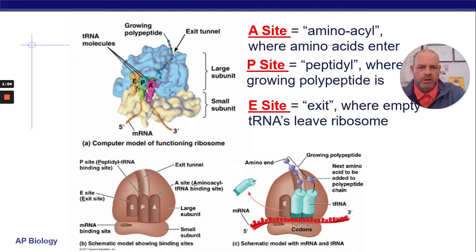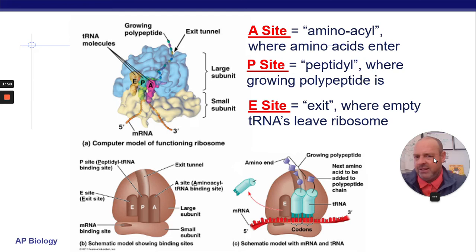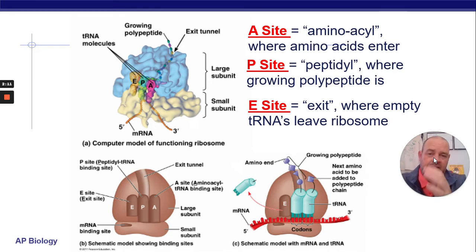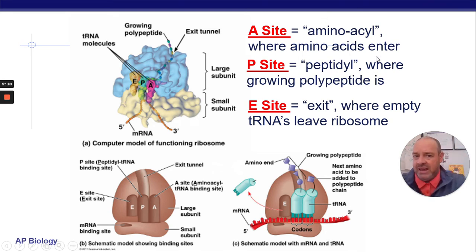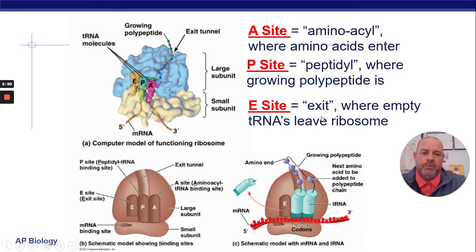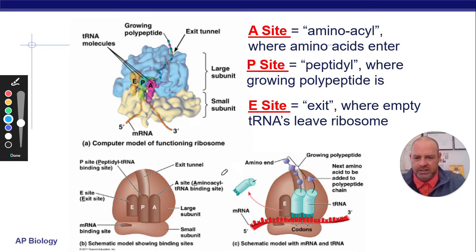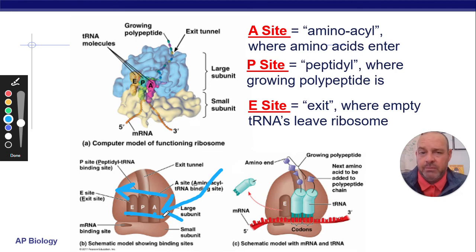Here are your three sites: you have an A site, a P site, and an E site, which spell APE. They're used in the order of APE, but from right to left. The A site stands for aminoacyl — this is where amino acids enter the ribosome. The P site is the peptidyl site, where you're making your polypeptide — another word for protein. The E is just the exit site where the empty tRNAs leave the ribosome.